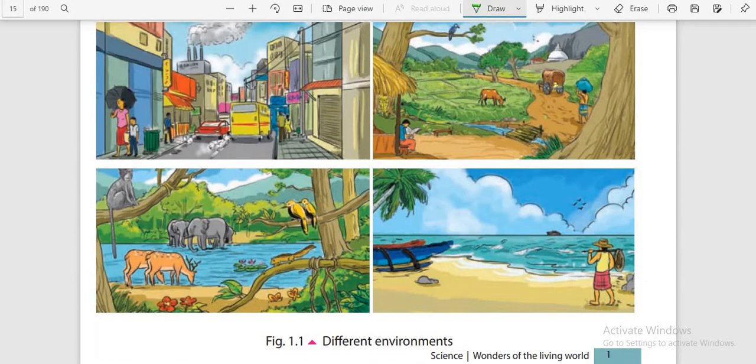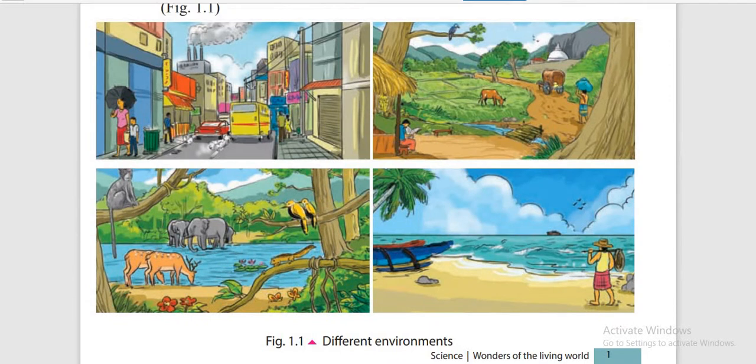We will see the four types of environment. Here you can see: the first, the picture of the city; next, the picture of the village; and the third and fourth are forest and freeside respectively.